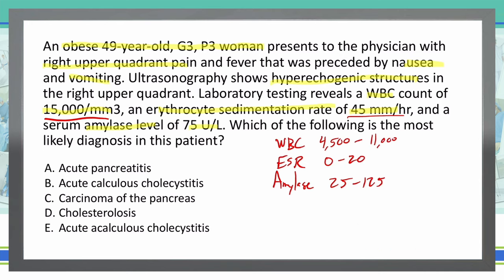Because amylase is normal, we have ruled out any pancreatitis-related causes. I can mark out anything that has to do with the pancreas — carcinoma of the pancreas and acute pancreatitis are out. That leaves us with two choices: cholecystitis and cholesterolosis.